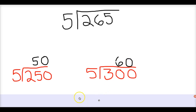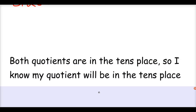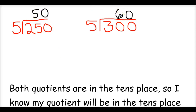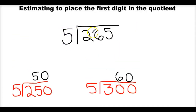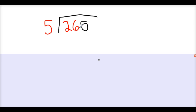Now we actually have to do the division problem. Let's look down a little bit further. Both quotients are in the tens place — this one has 6 tens, this one has 5 tens. So I know my quotient will be in the tens place when I actually sit down and solve 265 divided by 5. My answer is going to be in the tens place. Now let's actually do 265 divided by 5. I know that I'm going to start in the tens place, so I'm going to look at 26 first and divide 26 by 5.